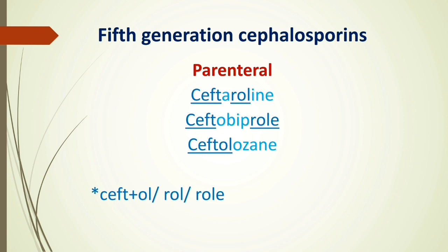The fifth generation cephalosporins contain 'ceft' plus '-ol' or '-rol'. For example, ceftaroline contains 'ceft' plus '-rol', ceftobiprole contains 'ceft' plus '-rol', and ceftolozane contains 'ceft' plus '-ol'. So the important mnemonic to memorize fifth generation cephalosporins is that they contain 'ceft' plus '-ol' or '-rol', and all drugs with 'ceft' plus '-ol' fall into the fifth generation cephalosporin category.